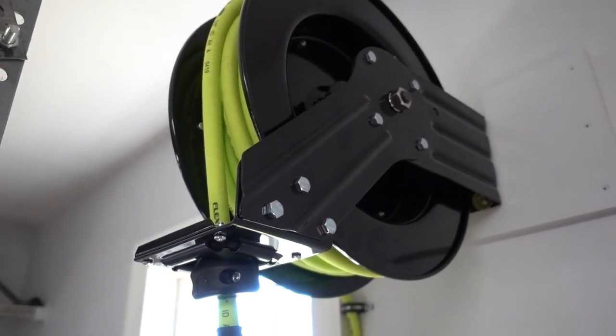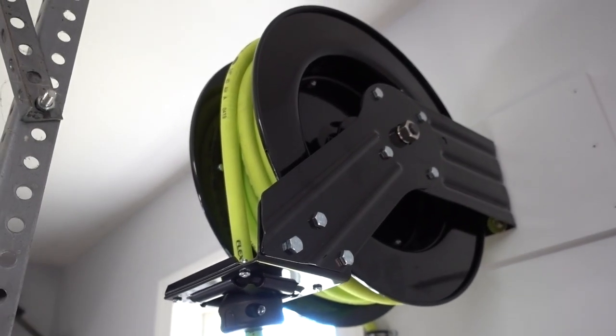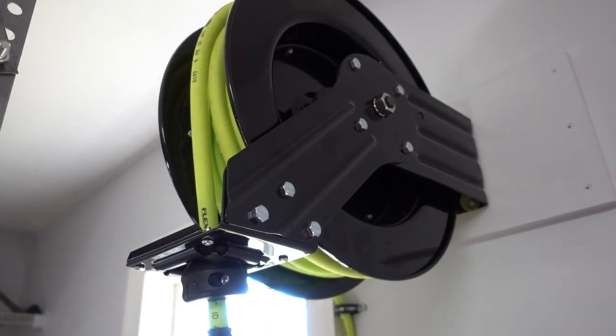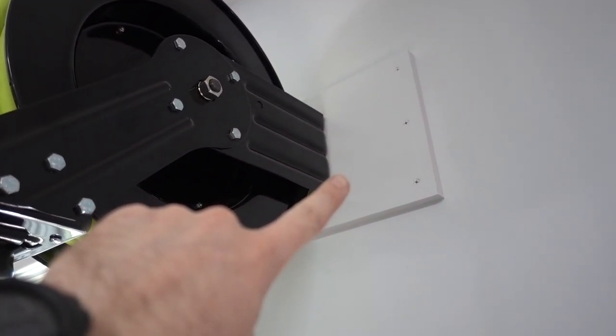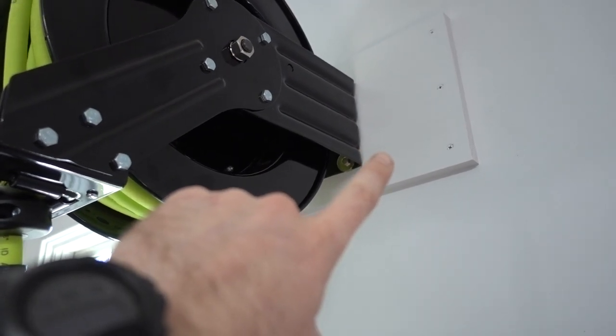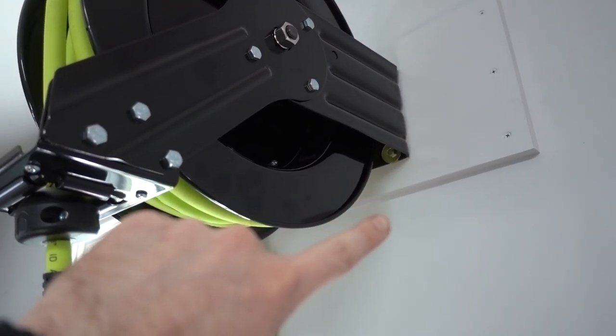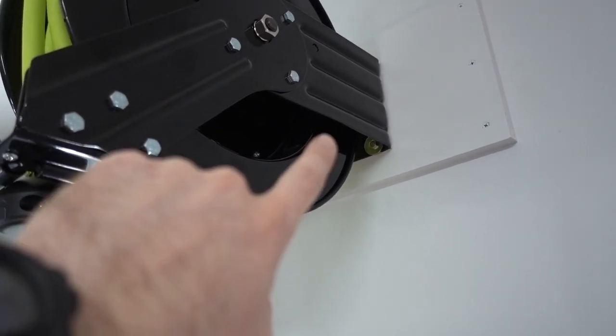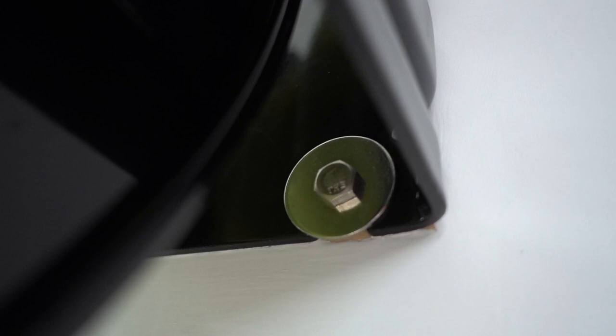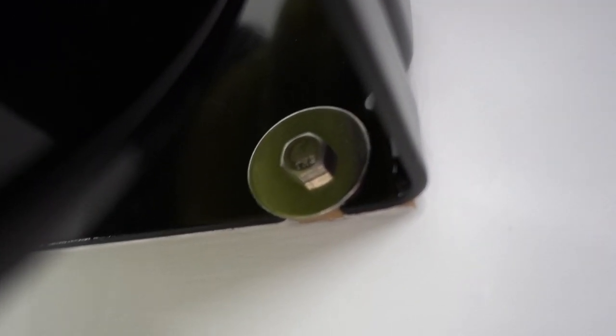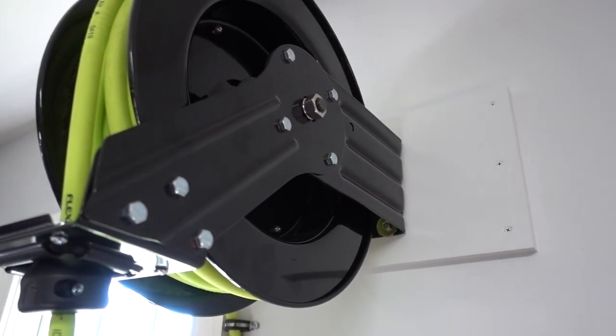All right, so today I want to share with you this Flexzilla air hose reel. As you can see here, I've already mounted it up on the wall. I had to use a piece of 1x10 board. That way I could get into some studs and get it mounted up. So, all I did was use some lags with washers to mount it into the board and then screwed the board into the wall with wood screws. And then of course it's painted to match the wall so it doesn't look so ugly.